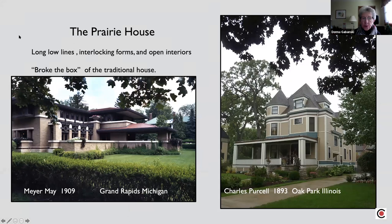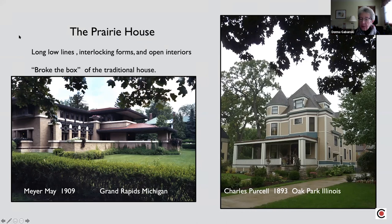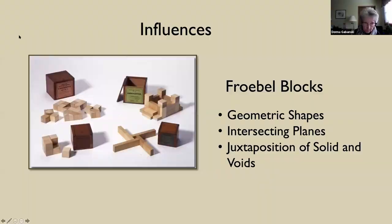It was here in Oak Park that Wright develops and comes into his own with what became known as the prairie house. Big features are always low lines and horizontal emphasis. The forms interlock, and open interiors — we often talk about how he broke the box of the traditional house. In contrast, the Charles Purcell house just down the street has a very obvious vertical emphasis with interior forms sticking out on the outside.